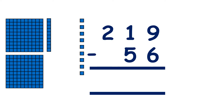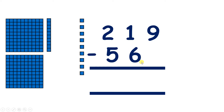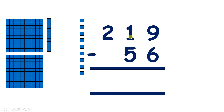Now we have 219 minus 56, and with column subtraction it's really important that we line up our place values. We don't want to put the 56 over here, or we might get confused and think we're taking away 5 hundreds and 6 tens, rather than 5 tens and 6 units.